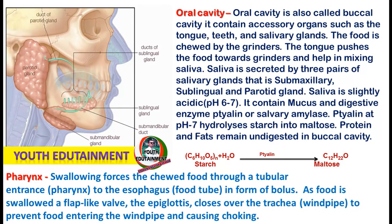The oral cavity is also called the buccal cavity. It contains sensory organs such as the tongue, teeth, and salivary glands. Food is chewed by the grinders; the tongue pushes the food towards the grinders and helps in mixing saliva. Saliva is secreted by three pairs of salivary glands.